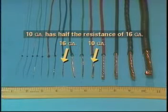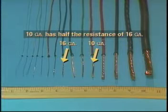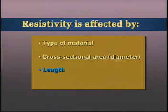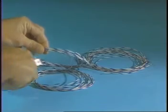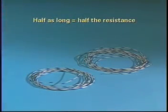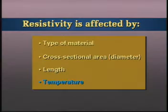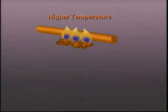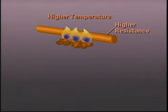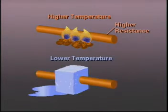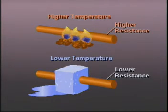The same is true for current flow. A 10-gauge wire has about half the resistance of 16-gauge wire because it is twice the diameter. The third factor affecting the resistivity of a material is its length. Longer wires have more resistance — a wire half as long has half the resistance. Finally, temperature also affects the resistivity of a material. For most materials, including most metals, high temperature creates high resistance. As the temperature of a material is lowered, its resistance also lowers.